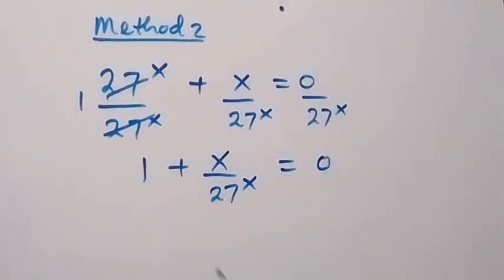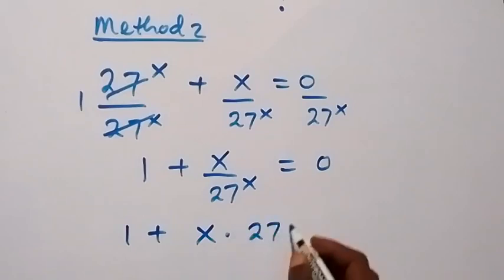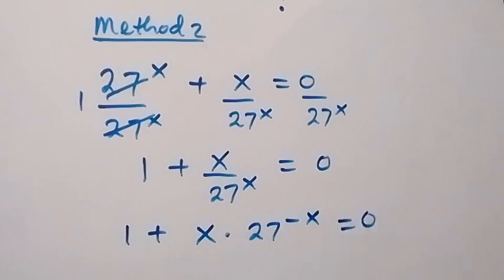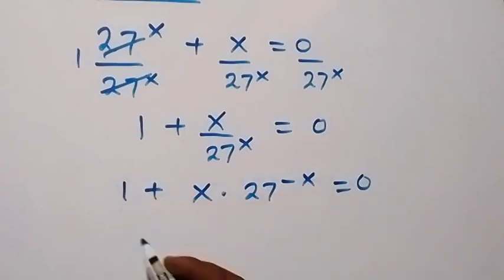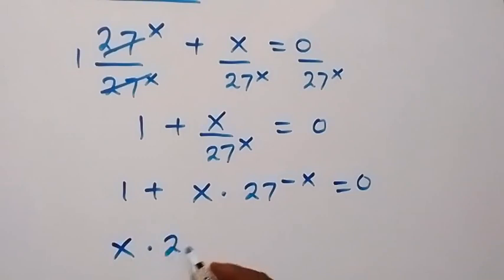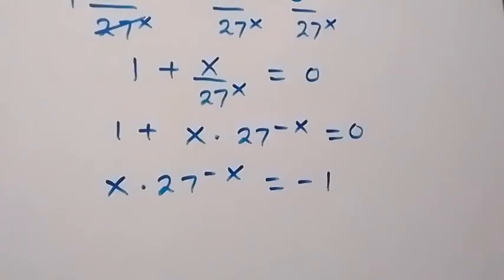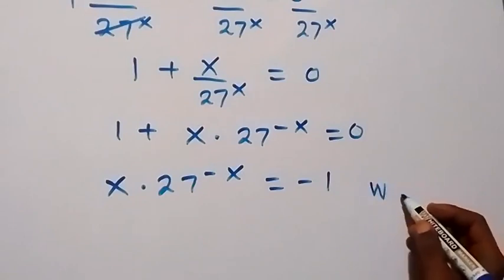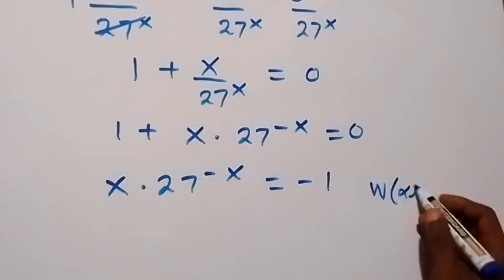Next, we can write this as 1 plus x times 27 raised to the power minus x from the law of indices, which equals to 0. Separating the 1 to the other side gives x times 27 raised to the power minus x equals to minus 1. From here, we want to apply the Lambert W function.